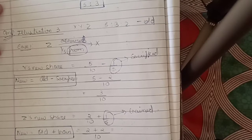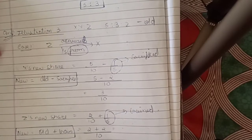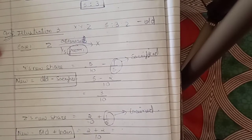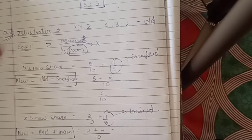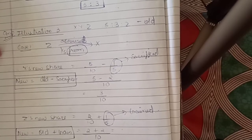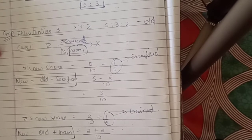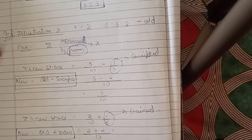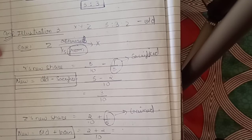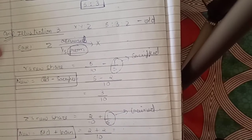Very good morning class. Today we are going to start with illustration number 3. In this we will discuss 4 types of cases on how to find out the new profit sharing ratio, sacrificing ratio, and gaining ratio. It is a very important illustration because it will explain all the cases that might come in the question.